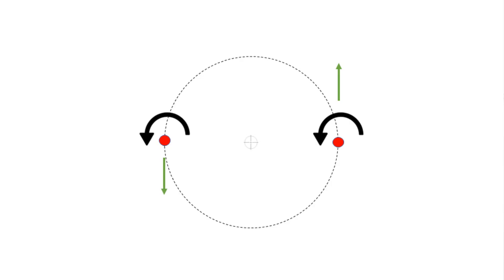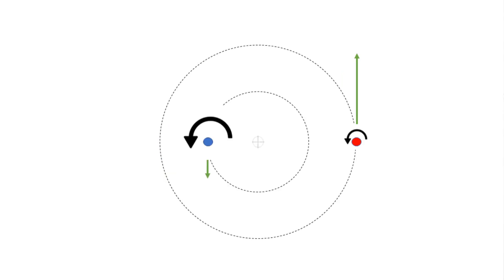In any co-rotating vortex pair, the total circulation will not equal zero, so there will be an inherent rotation of the structures. Considering two equal-strength vortices, the inner sides of the vortices both shear harder than the outer, causing them to rotate on the same radii about the same point. In the case of two unequal-strength vortices, the stronger will circulate at a smaller radius, where they'll both circulate about the same point.